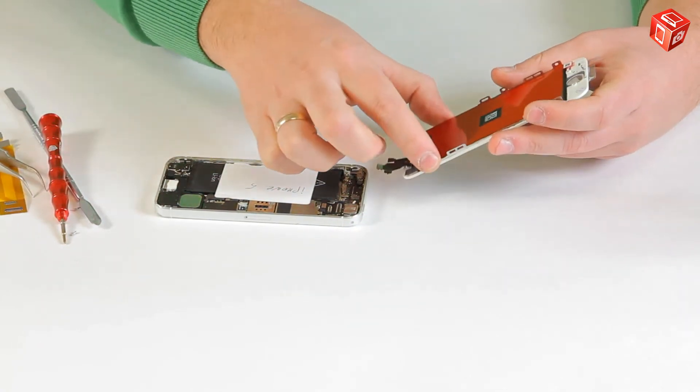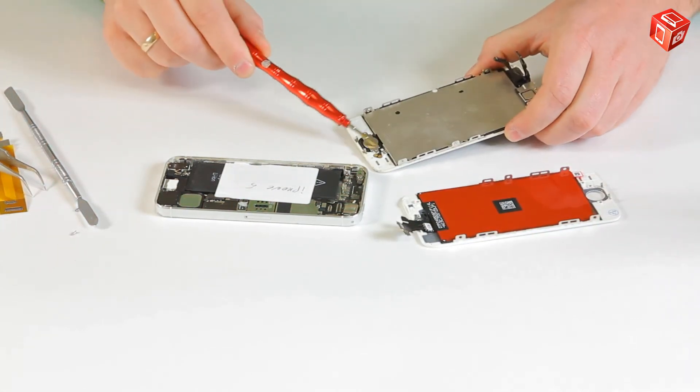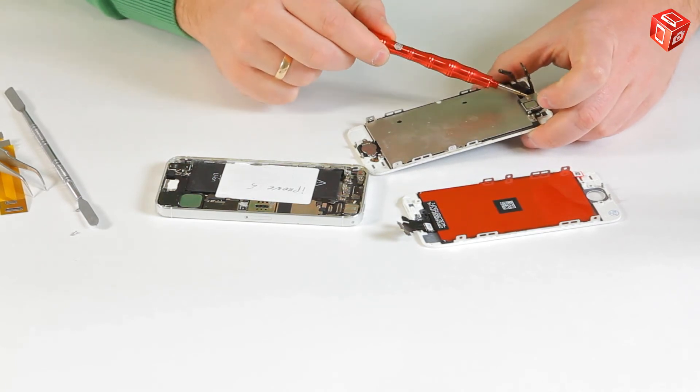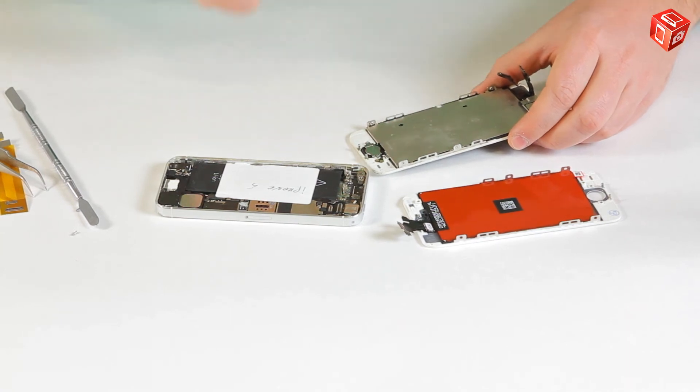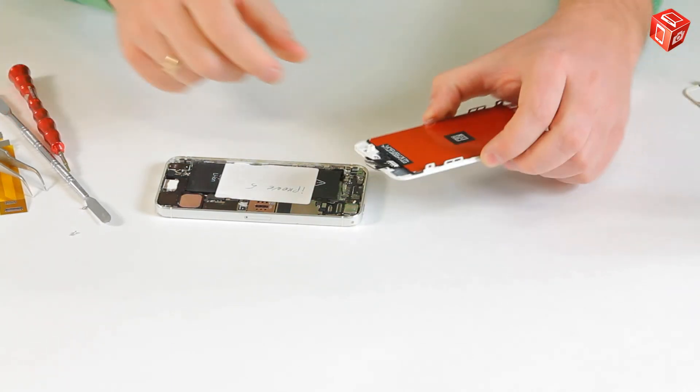Before attaching the display module to the phone, don't forget to remove the home button, home button flat cable, protective screen, speaker and its flat cable, and proximity sensor from the old module. It is worth noting that this video is only about correct connection of the display module and not about the complete process of replacing the module.